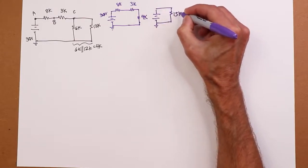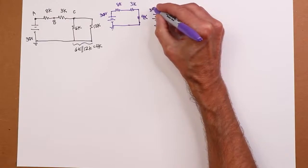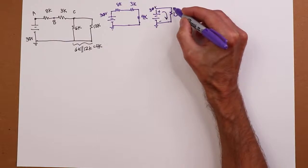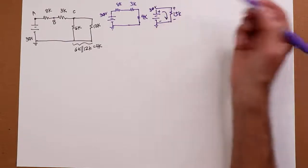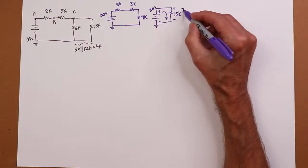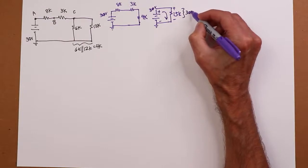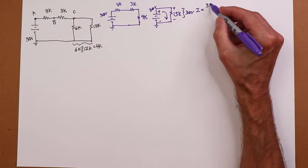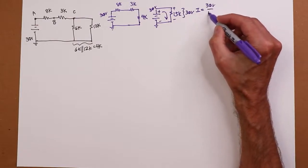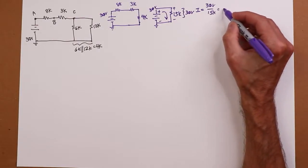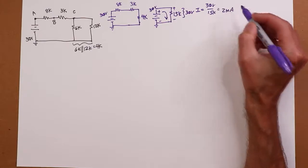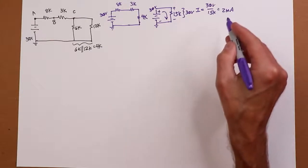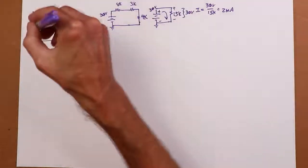You know, very similar to the very first circuit we ever looked at. And I know that's going to produce a current like this. And there's going to be 30 volts across the 15K. And from that, I can use Ohm's law and find out what the current is. That's just V over R. 30 volts over 15K, which is 2 milliamps.